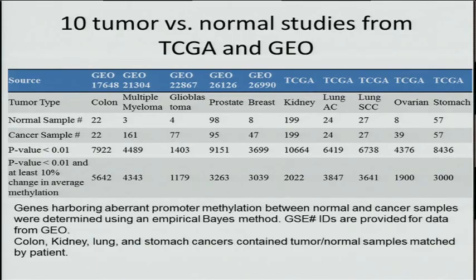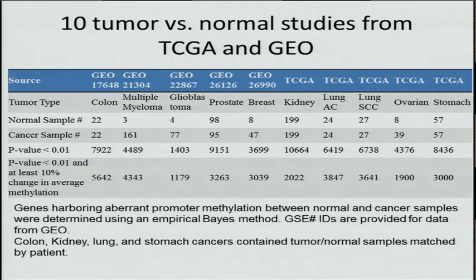These are the different cancer types we studied — half from Gene Expression Omnibus and half from TCGA. They include colon cancer, multiple myeloma, glioblastoma, prostate and breast cancer from GEO, and kidney, lung AC, lung SCC, ovarian, and stomach cancer from TCGA. We downloaded all beta values representing percent methylation and tested for differential methylation between tumor and normal samples using an empirical Bayes method. All cancer types had at least 1,000 sites with a p-value less than 0.01 and at least a 10% change in average methylation. Importantly, LRPath did not require us to choose any specific criteria — we put in all the data for the enrichment analysis.